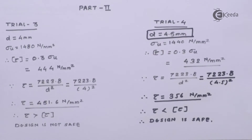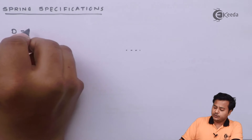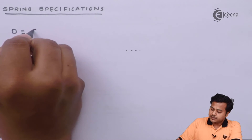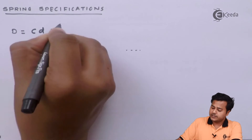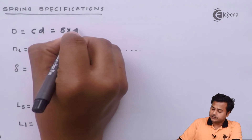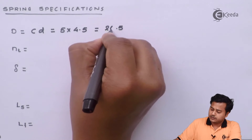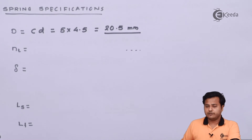After four trials, the final selected wire diameter is 4.5 millimeters. Now let us determine the spring specifications. The mean coil diameter is calculated using the spring index C, which is specified as 5, and it comes out to be 22.5 millimeters.